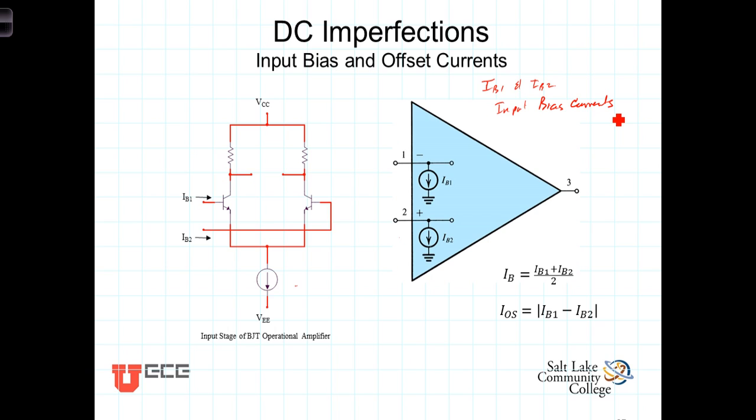The average of those two currents is a quantity of interest that we'll be using later to simplify things. This is the average input bias current.